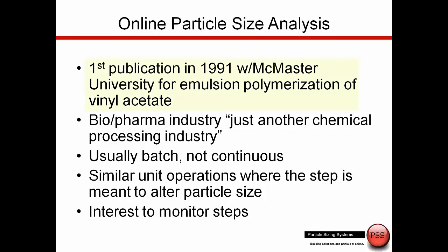We're going to move from the laboratory into the process environment. The first time we did this, published back in 1991, was work done in conjunction with McMaster University in Canada — a polymerization emulsion process for polyvinyl acetate. We'll show some data from that work and also some data from the biopharma industry collected much more recently. A bio plant is just another chemical plant, and we're using this as a way to control some kind of unit operation where that operation is altering the particle size step.